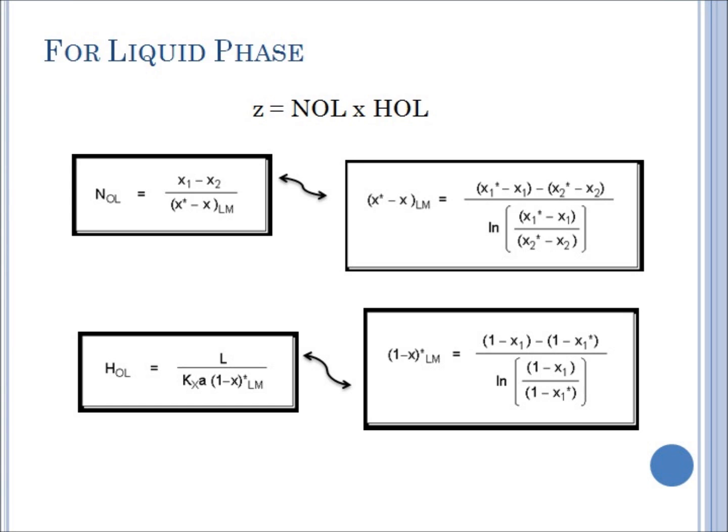If your basis is the liquid phase, Z is equal to NOL times HOL. NOL is equal to X1 minus X2 over X prime minus X, while HOL is equal to L over KXA over 1 minus X prime.